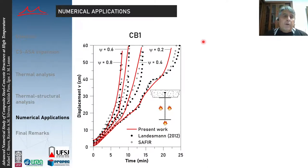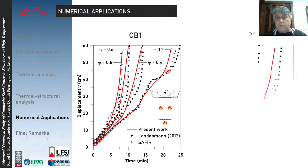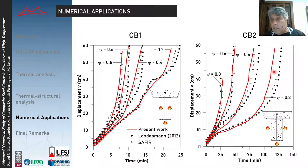The result for CB1 shows the displacement versus time for four different load levels. Comparing our numerical result with Landesman and Safir, a good agreement is observed. The CB2 result similarly compares the mid-span displacement V with time for the four load levels, and again a good agreement was observed between our results and Landesman and Safir.